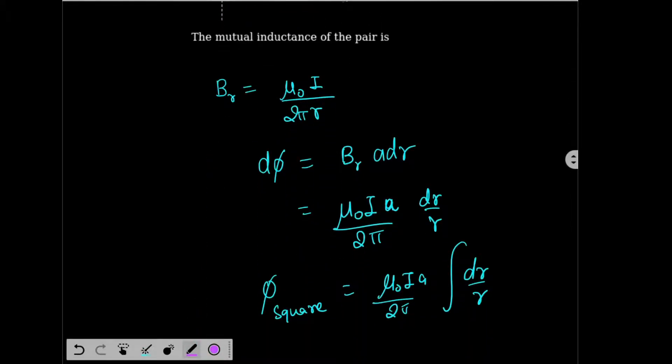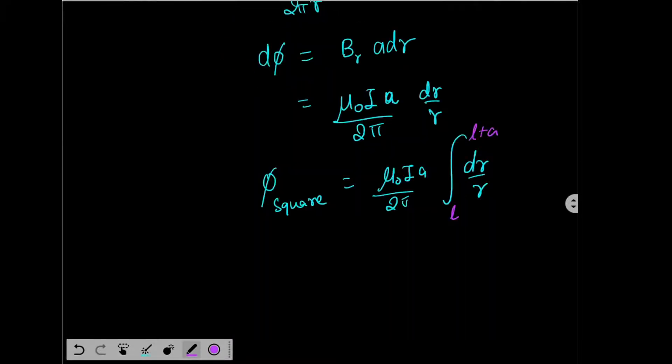So the limits are L to L plus A. So the flux for one square, let's call it phi 1, will be mu0 IA by 2 pi log L plus A by L.